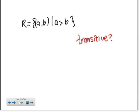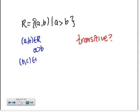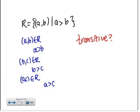Looking at a simple proof: if (A, B) is in R, then A is greater than B. And if (B, C) is in R, then B is greater than C. If this is transitive, then (A, C) should be in R. Since A is greater than B and B is greater than C, we know that A is greater than C. So we know that this relation is transitive.